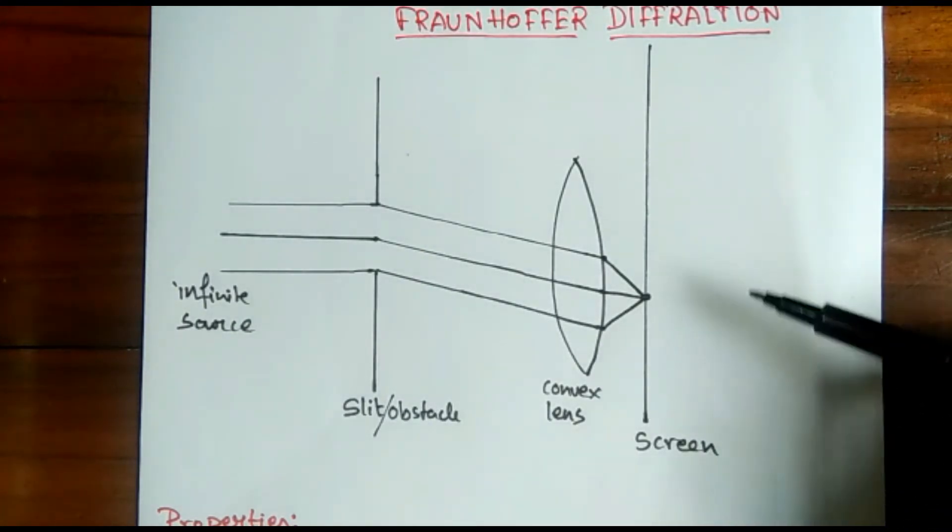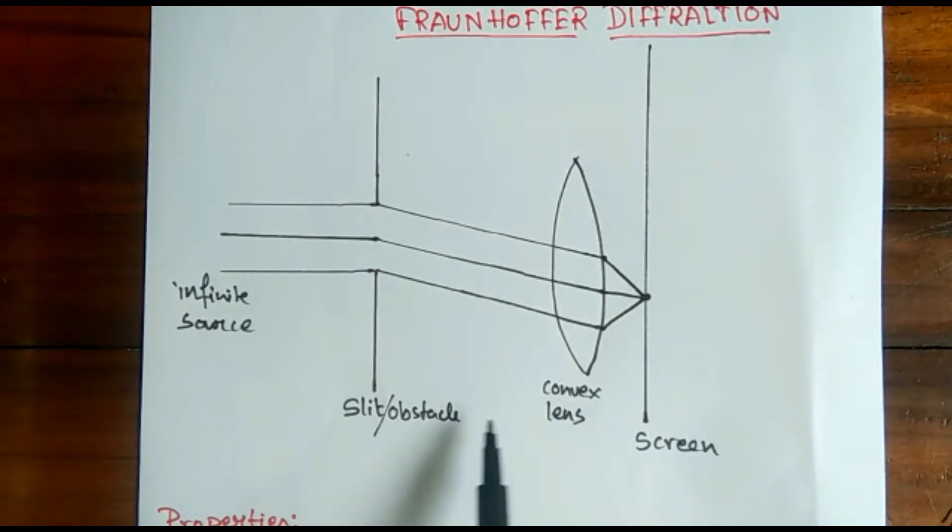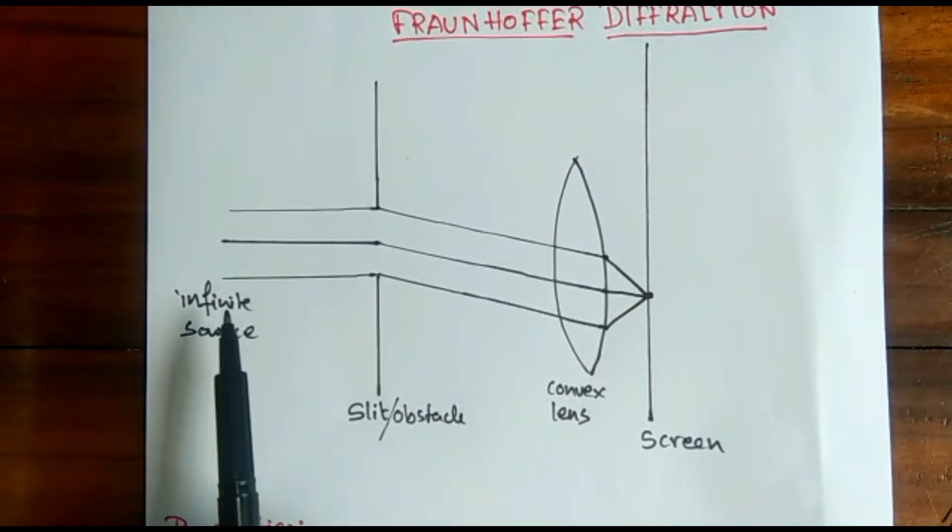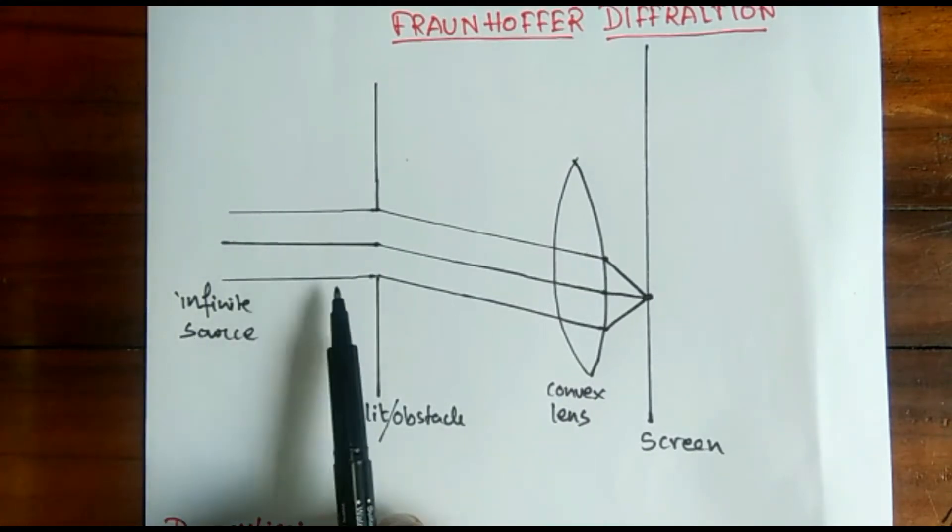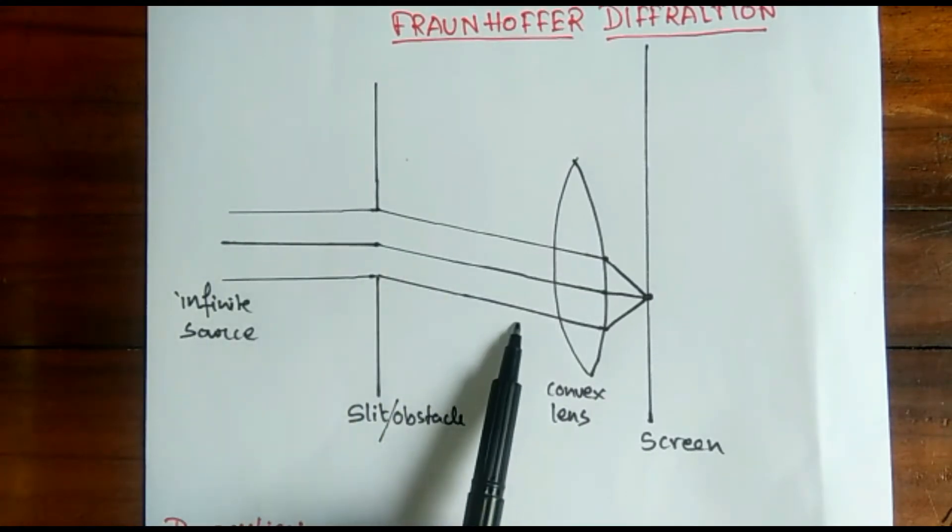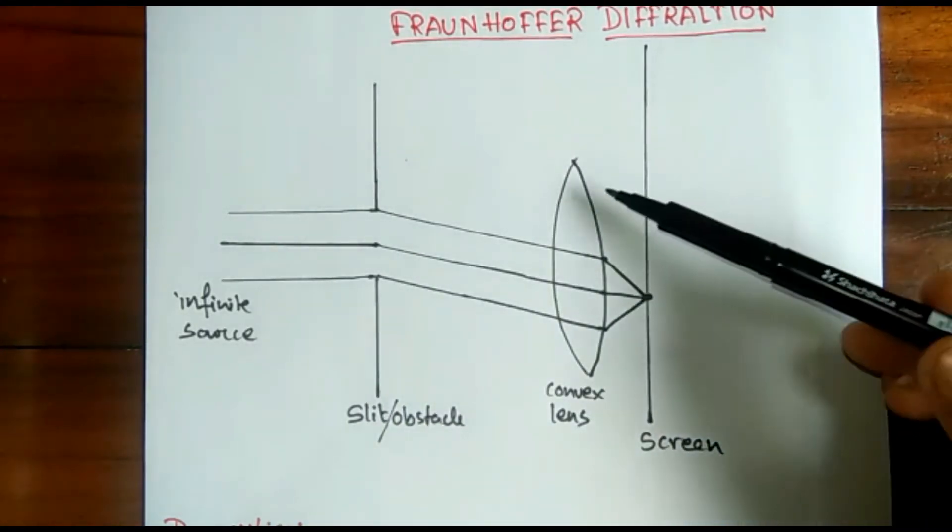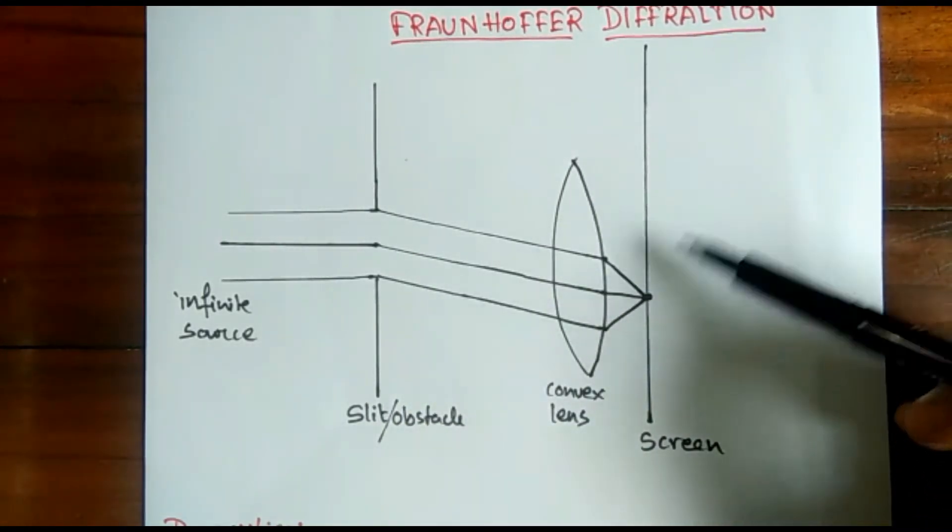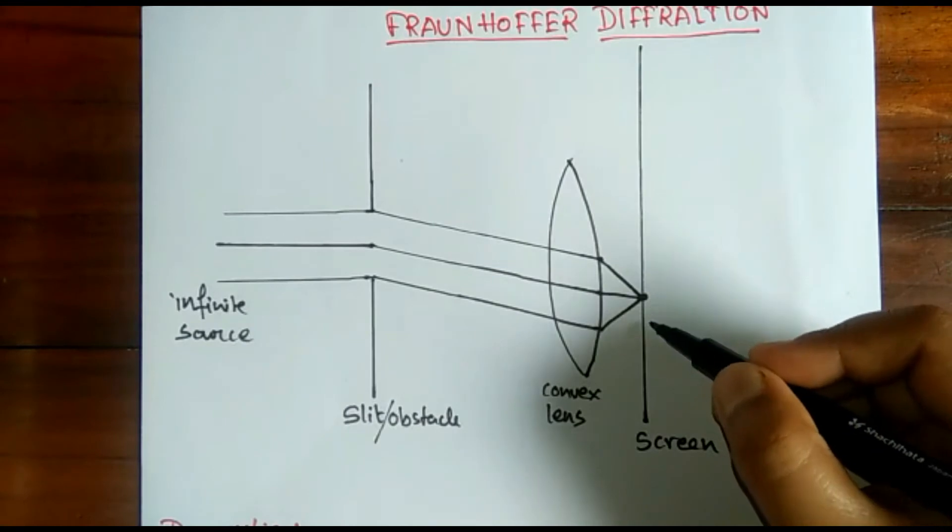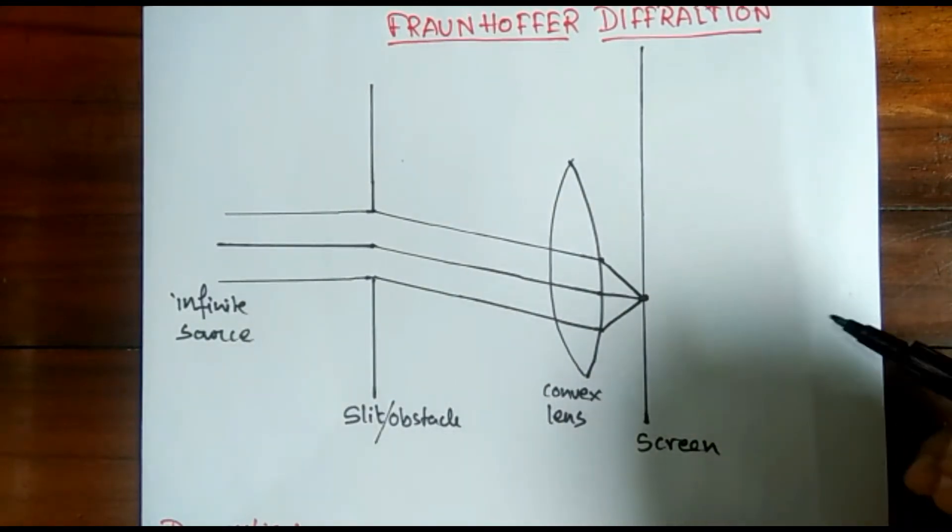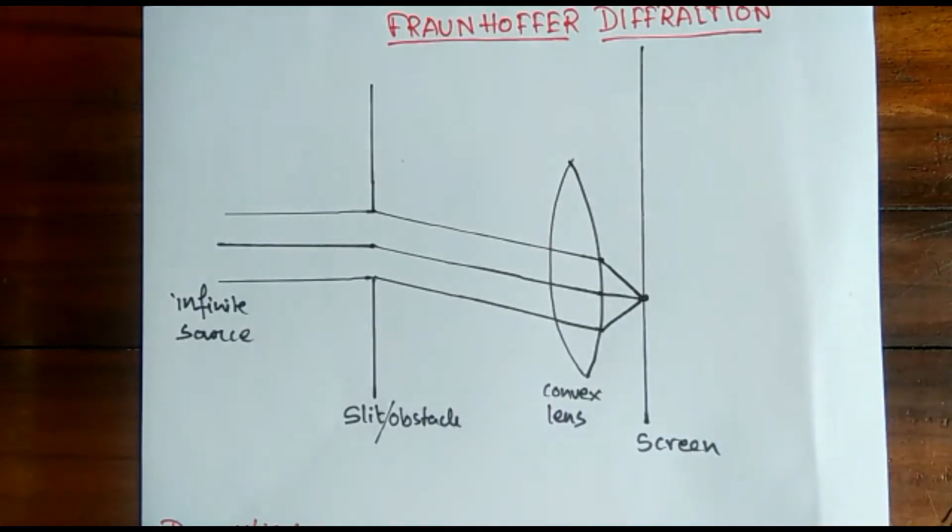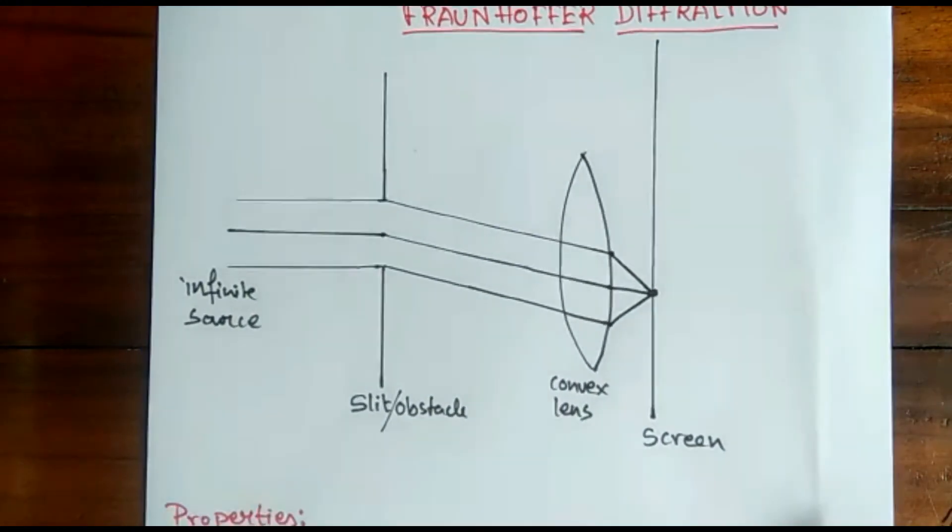So you can see the source of light here is at the infinite point. When it is passing through the obstacle, we pass it through a convex lens, and finally the diffraction pattern is shown on the screen. So this is basically Fraunhofer diffraction.